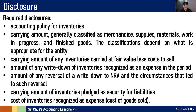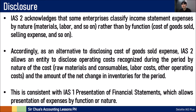Cost of inventories recognized as expense — which is what we call cost of goods sold, because the inventory has already been sold. IAS-2 acknowledges that some enterprises classify income statement expenses by nature rather than by function, as mentioned in previous videos regarding the nature of expense method and function of expense method. Accordingly, as an alternative to disclosing cost of goods sold by function, IAS-2 allows the entity to disclose operating costs recognized by nature: raw materials and consumables, labor costs, and other operating costs, and the amount of net change in inventories for the period under the nature of expense method. This is in accordance with IAS-1, which allows you to present expenses either by function or by nature, and IAS-2 honors that as well.